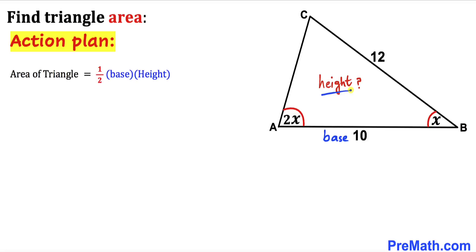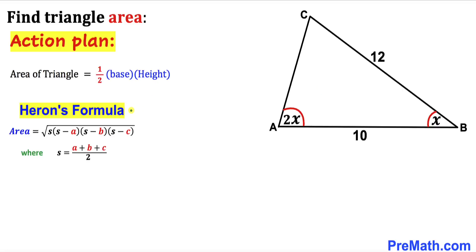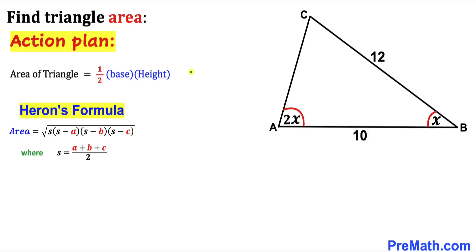If somehow we could find the height of this triangle we could easily find the area. Another option is to use Heron's formula, where our a value is 12, our c value is 10, and b is unknown. In this video I will be using the formula area equals half times base times height instead of Heron's formula, though you are welcome to use Heron's formula as well.